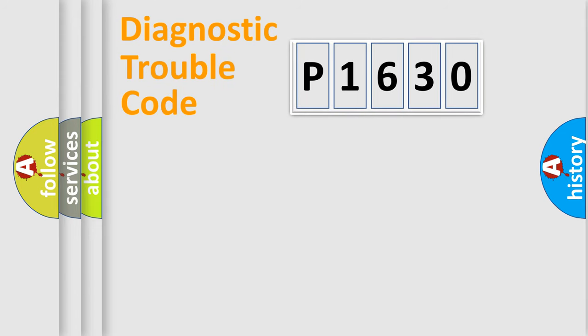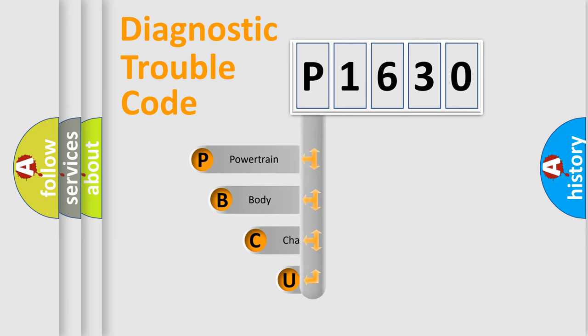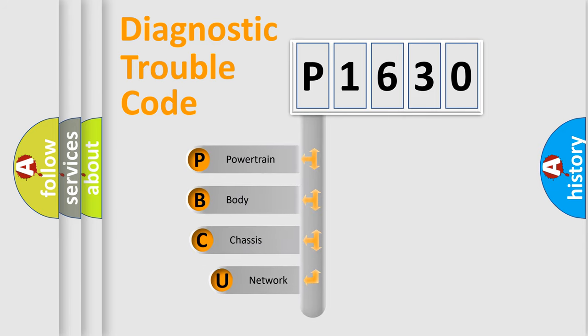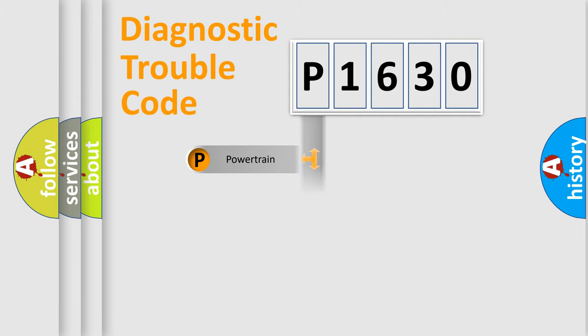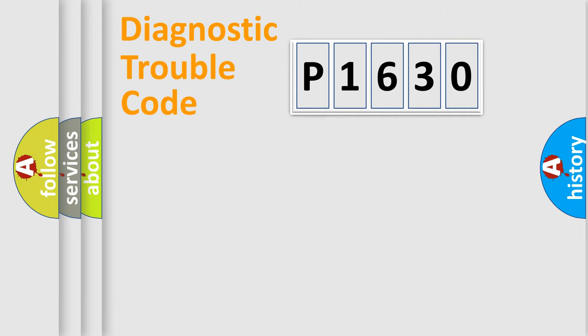Let's look at the history of diagnostic fault code composition according to the OBD2 protocol, which is unified for all automakers since 2000. We divide the electric system of an automobile into four basic units: Powertrain, Body, Chassis, and Network.